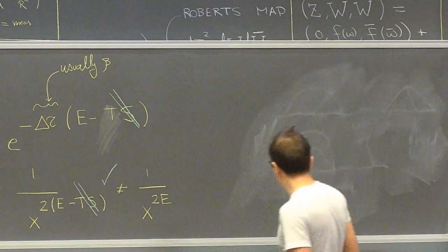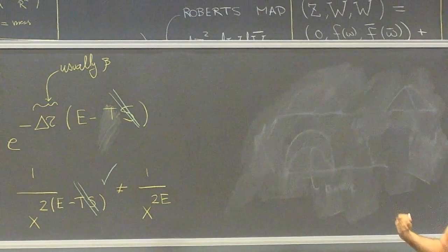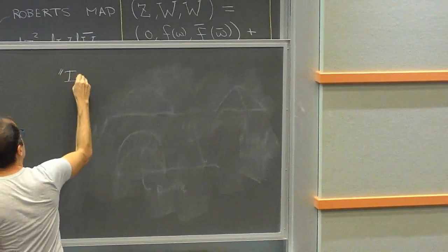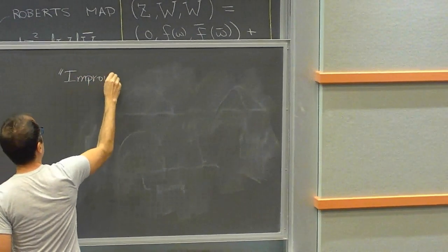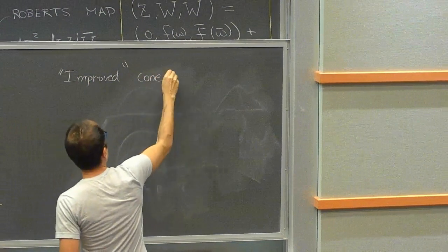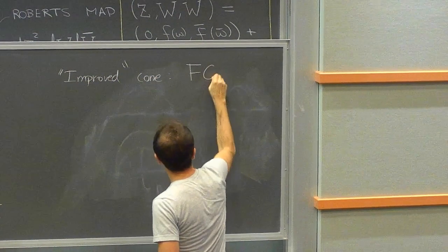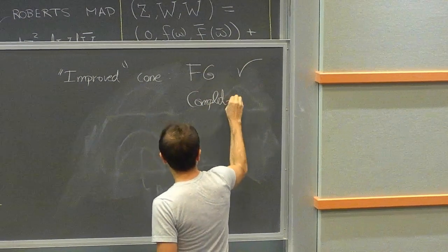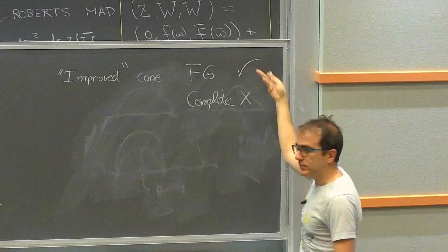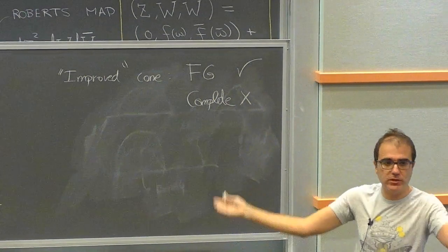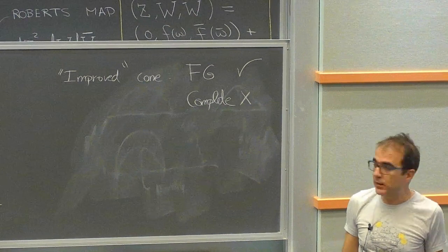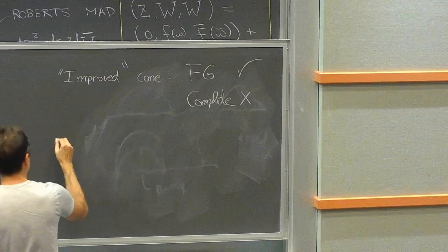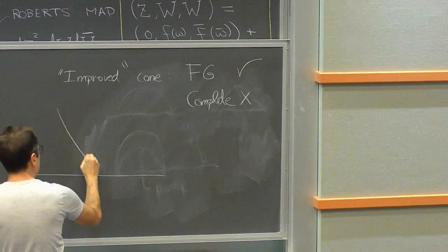First comment: the cutoff at ε should strictly be placed in the improved cone, where Fefferman-Graham holds. Second comment: the improved cone has a big advantage — boundary conditions are manifest — but a big drawback: it is not complete. This metric doesn't go all the way to the horizon. The improved cone has a cone singularity where the determinant of the metric equals zero, which in three dimensions occurs at r* = √M, while the horizon is at r_H = √(M−1), so r* > r_H.